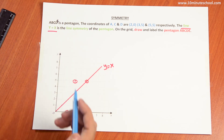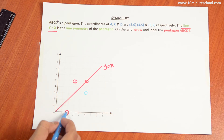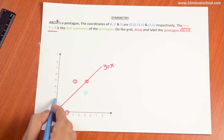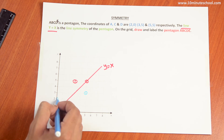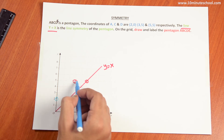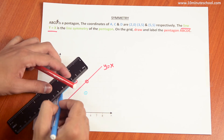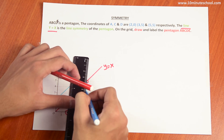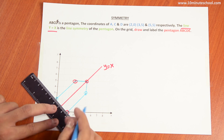Now I have the points and I need to reflect each one to overlap. This is a reflection pointer. So now I am going to draw the pentagon. This is a perfect pentagon.